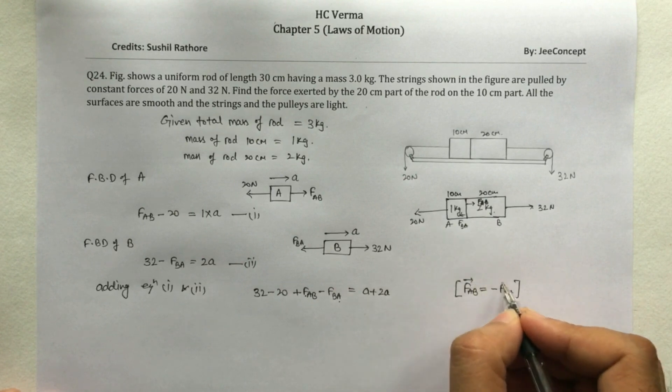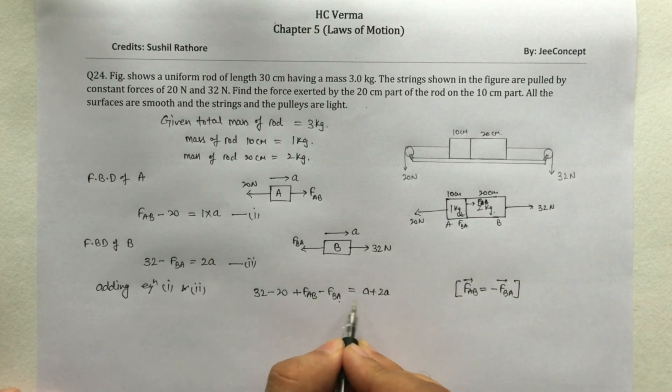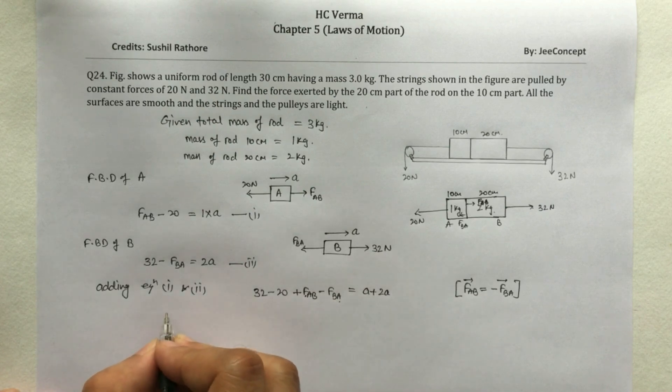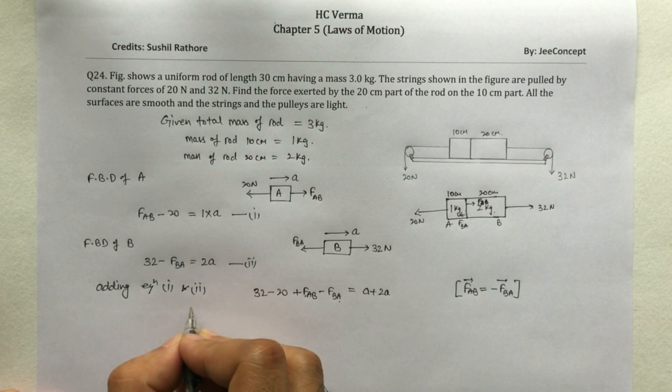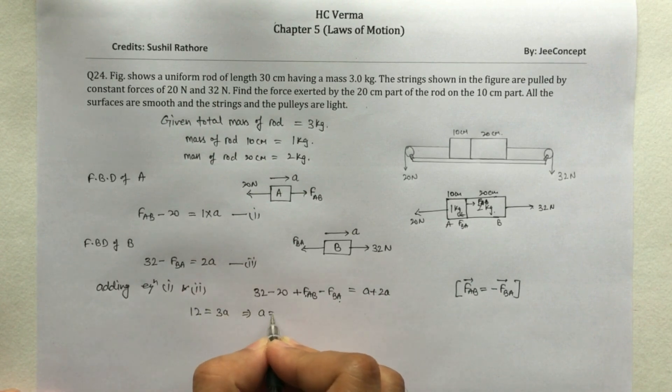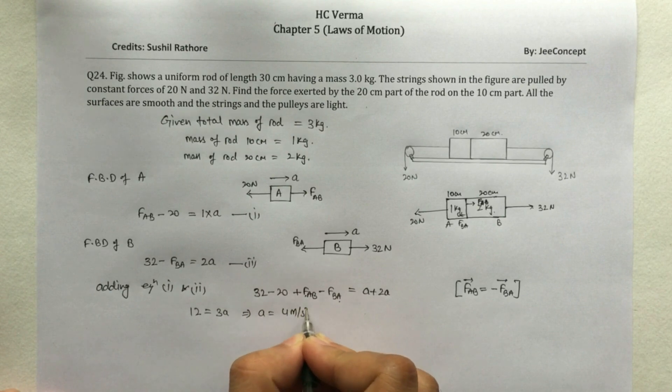So this is the vector quantity and we are dealing in the magnitude. So FAB minus FBA is 0 because the magnitudes are same. So that means 32 minus 20 is 12 equals 3A. So the acceleration will become 4 meter per second square.